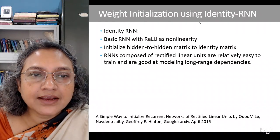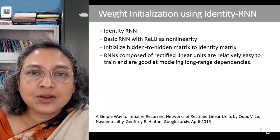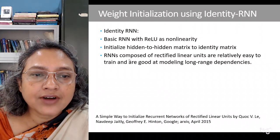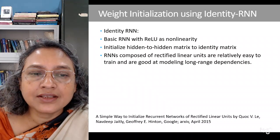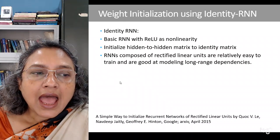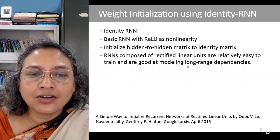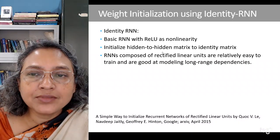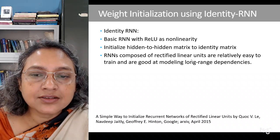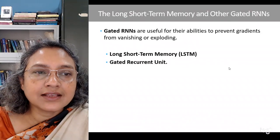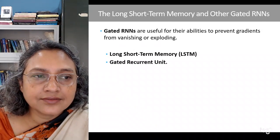First we will briefly talk about weight initialization using identity RNN. This is a basic RNN which uses ReLU as the non-linear function and initializes the hidden-to-hidden matrix as an identity matrix. The RNN composed of rectified linear units is relatively easier to train and good at modeling long-term dependencies. By a combination of identity matrix weight initialization and using ReLU units, the effects of gradient diffusion can be handled to a certain extent.